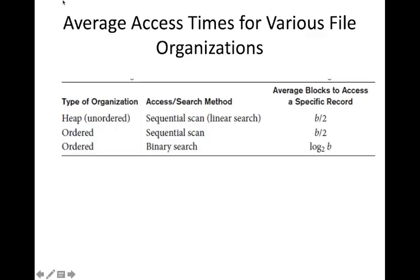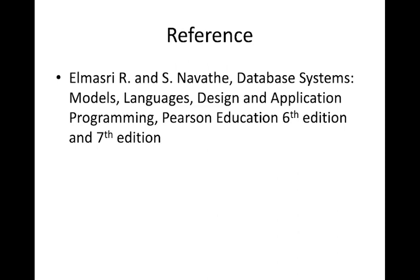The average access times for various file organizations are: for heap (unordered) files using linear search, the average number of blocks to access a specific record is B/2. For ordered files using sequential/linear search it is also B/2, but ordered files also support binary search with access time of log₂(B) blocks, making ordered files much more efficient for searching.